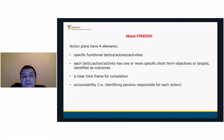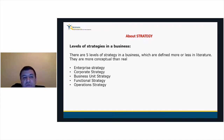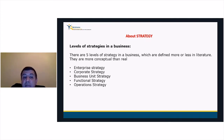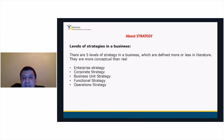There are normally five levels of strategies in an organization. These are more conceptual than real, but they help to conceptualize the types of strategies in an organization. They are: enterprise strategy, corporate strategy, business unit strategy, functional strategy, and operational strategy.